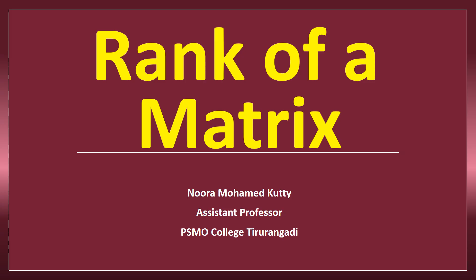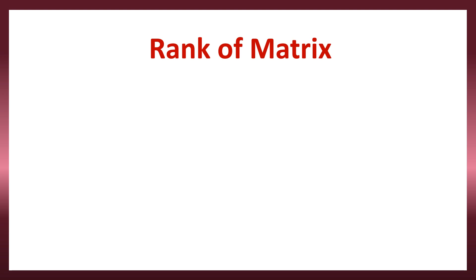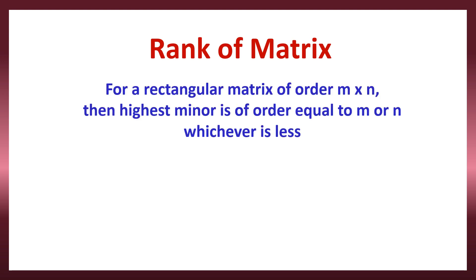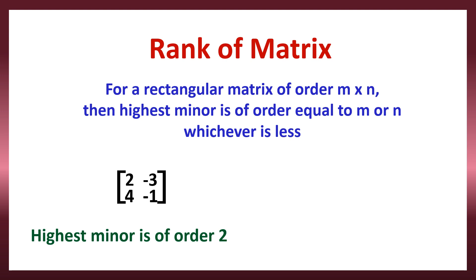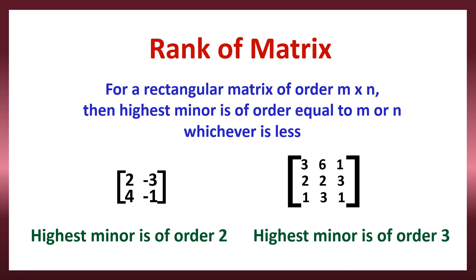In this video, let us discuss how to find the rank of a matrix. The rank of a matrix is found based on the highest minor of that matrix. The highest minor is the determinant formed with all the elements of that given square matrix. For example, the highest minor of a 2x2 matrix is of order 2, and for a 3x3 matrix, the highest minor is of order 3.